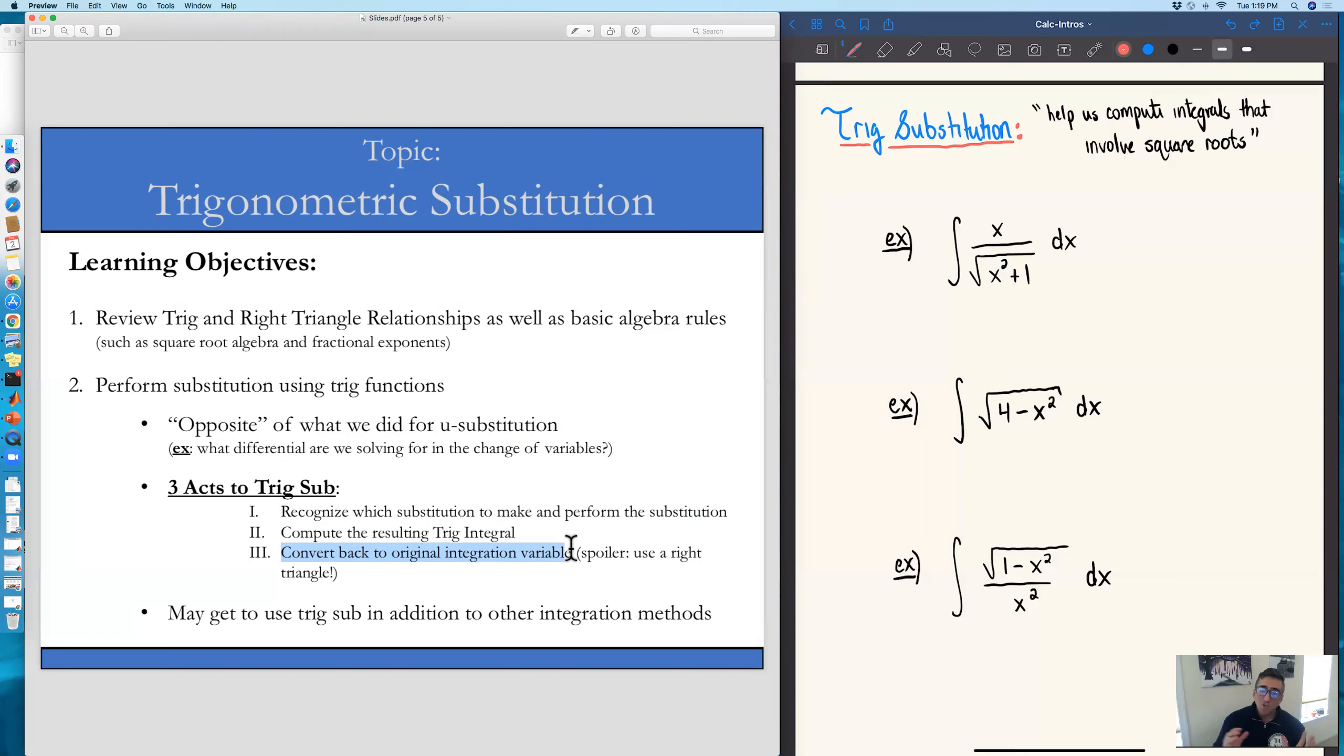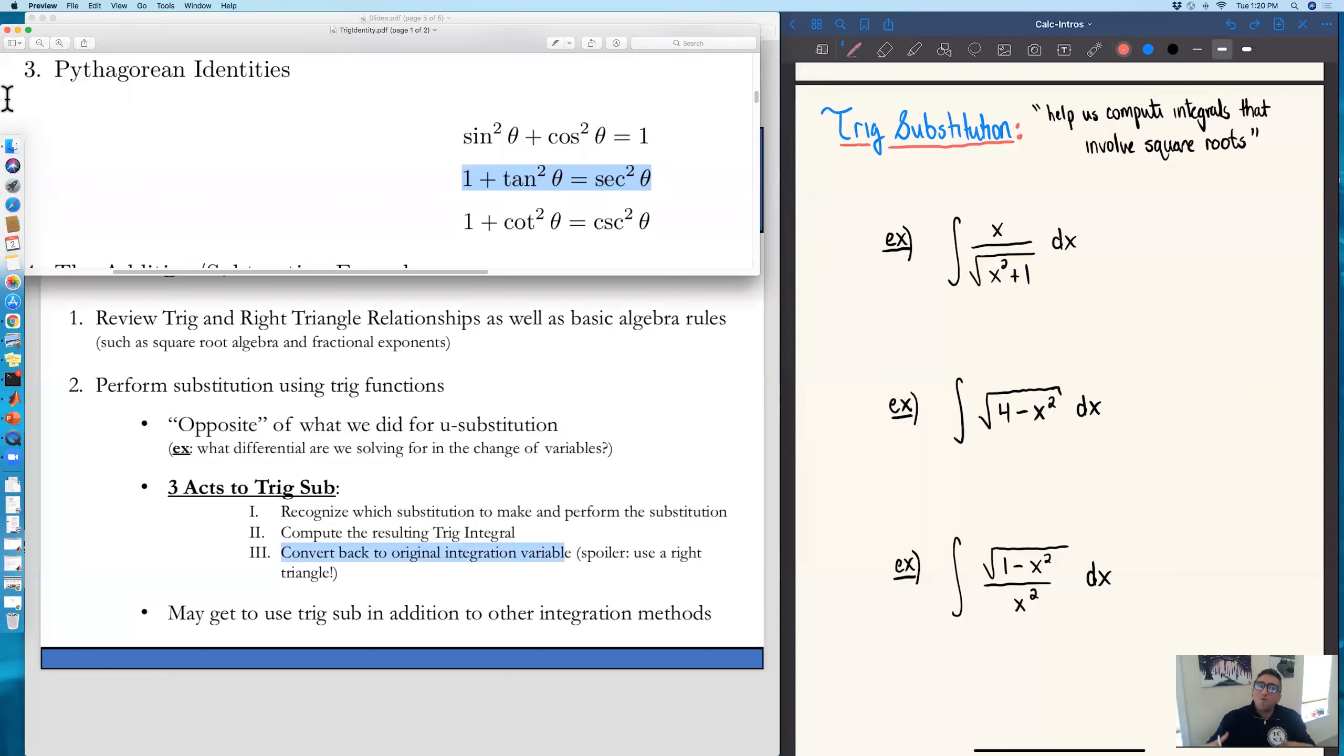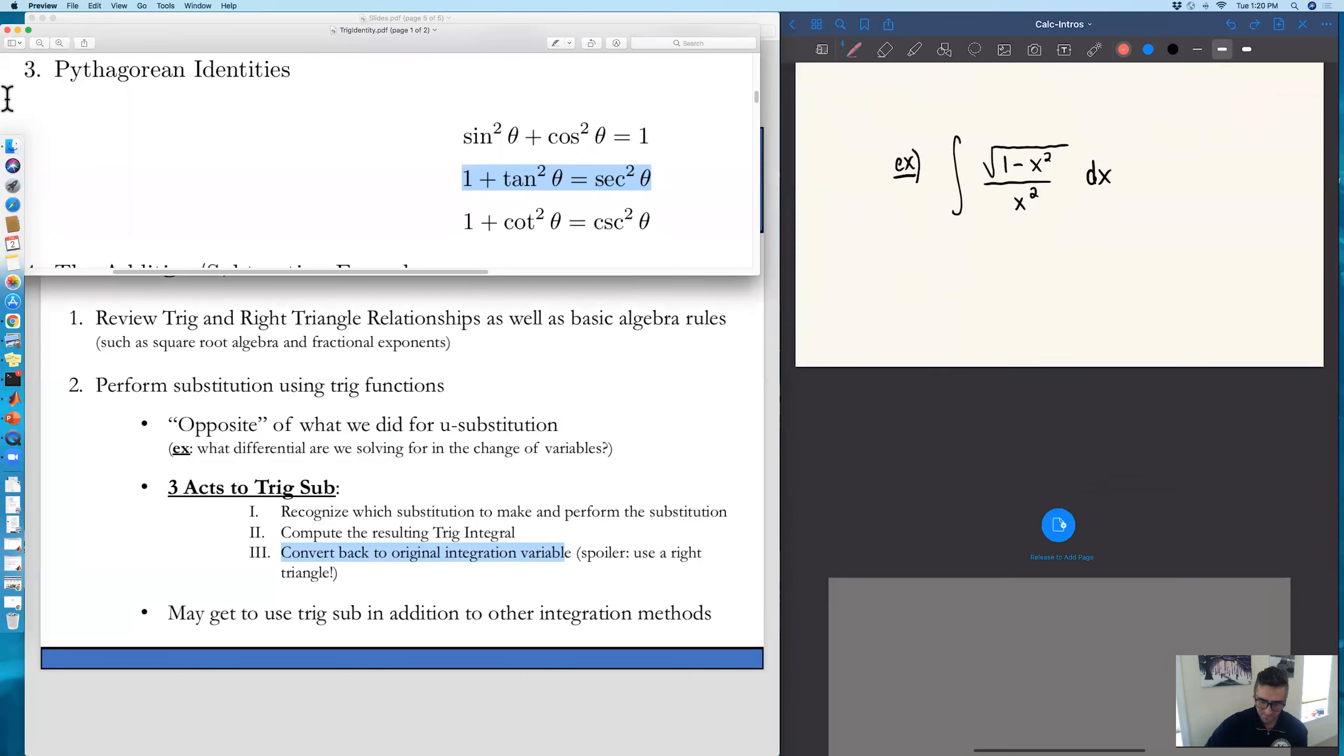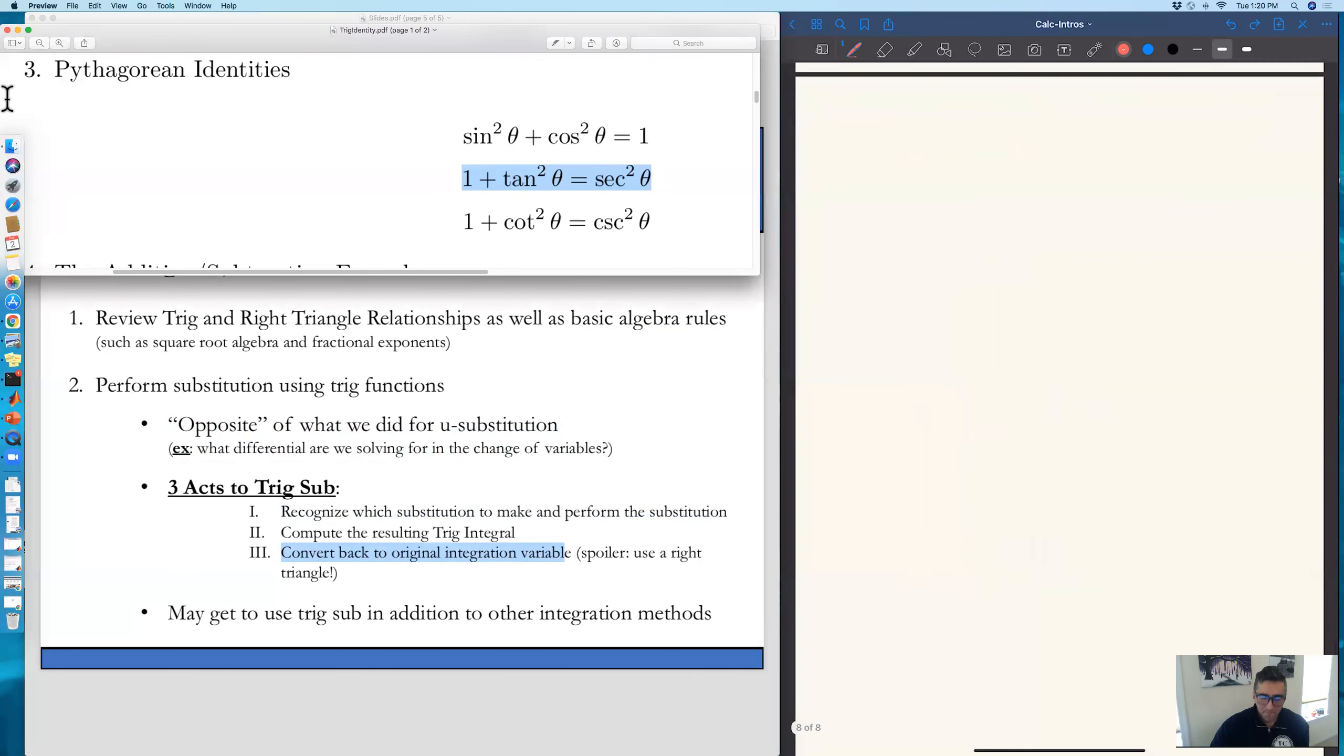So we're going to do one of these examples in the next video. But what I want to do is sort of tell us what we're looking for in terms of these Pythagorean identities. So at this point, what I recommend is actually just going ahead and doing the following.